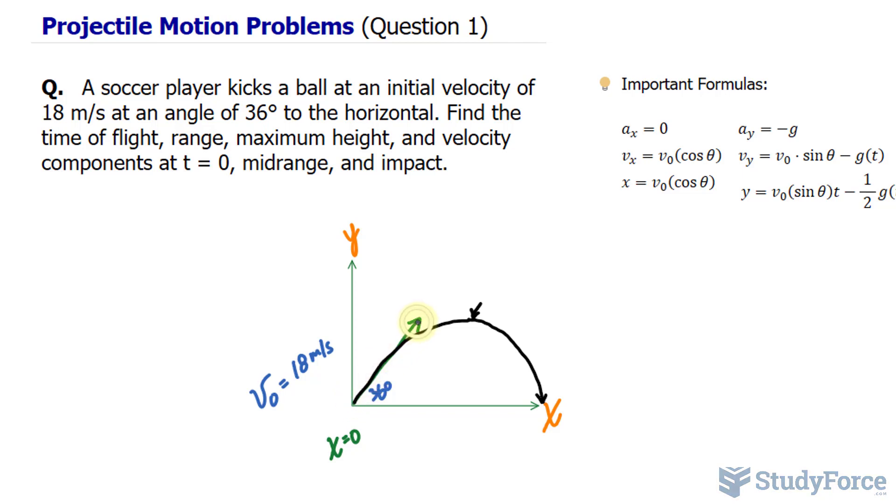So I would like you to focus in on this part specifically. We have a right triangle, and remember, that's that arrow right there. This angle is 36 degrees, and the magnitude of this vector is 18. To find the x component, which is this part right here...